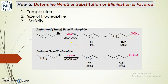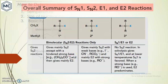When there is competition between substitution and elimination, three factors decide the outcome: temperature, size of the nucleophile, and basicity. In summary: methyl halide gives SN2; primary alkyl halide gives mainly SN2, except with a hindered base where it gives the eliminated product; secondary gives mainly SN2 with weak bases and E2 with strong bases.